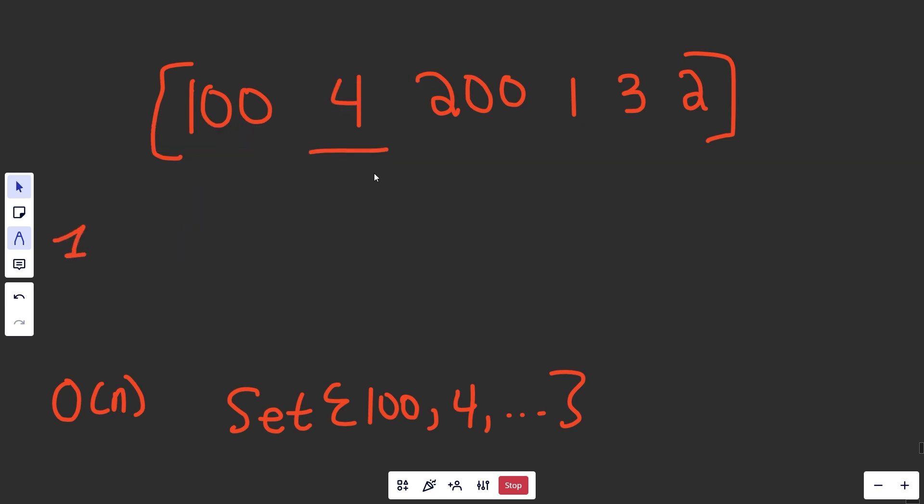We'll check for 4. Does 4 start a sequence? Is 3 in the set? Yes, it actually is. So 4 is not starting a sequence. We don't want to work with it. We want to worry about that later. 200, it does start a sequence, but it's just going to be a sequence of length 1.